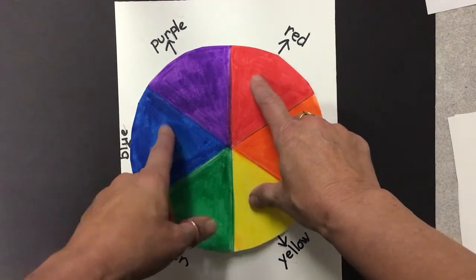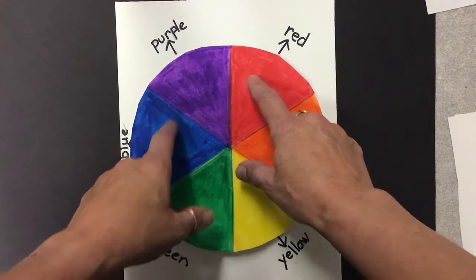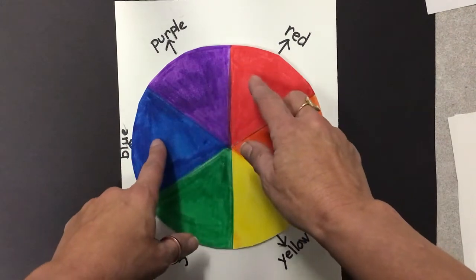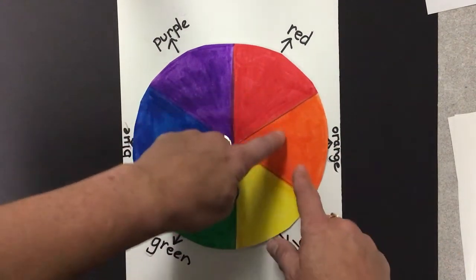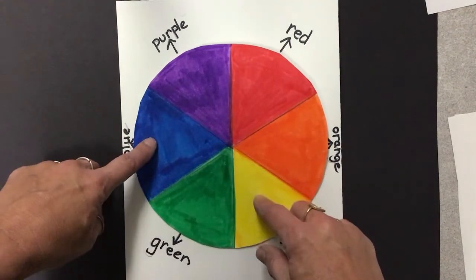And then when we mix two primary colors together, we get the secondary colors. So we've got red and blue make purple, red and yellow make orange, and blue and yellow make green.